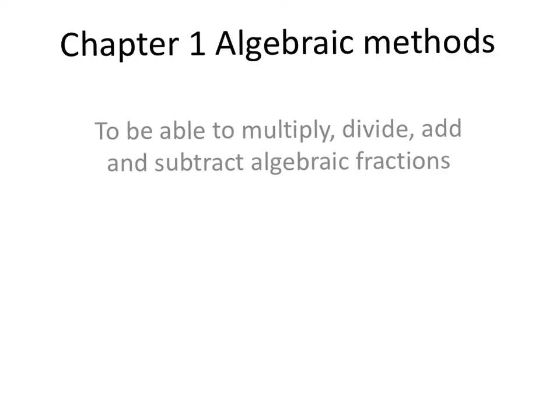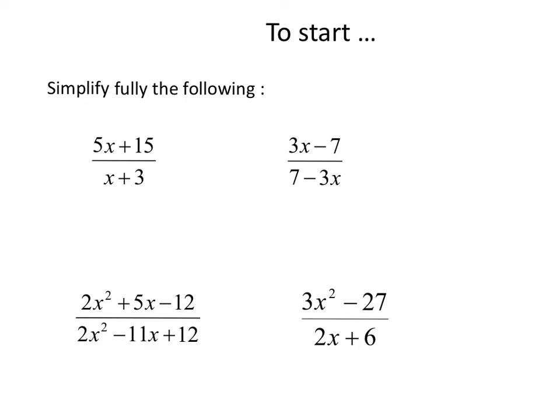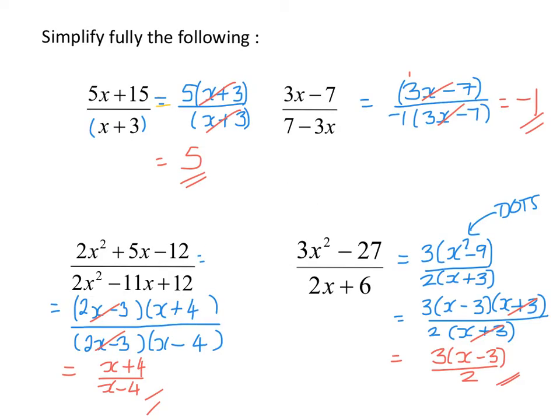In this chapter we're going to start our Year 2 A-level work looking at algebraic methods, beginning with a quick recap of how to multiply, divide, add and subtract algebraic fractions. Here are the answers to the starter — the key thing is to always factorise expressions in a fraction, both in the numerator and denominator, and then cancel out.